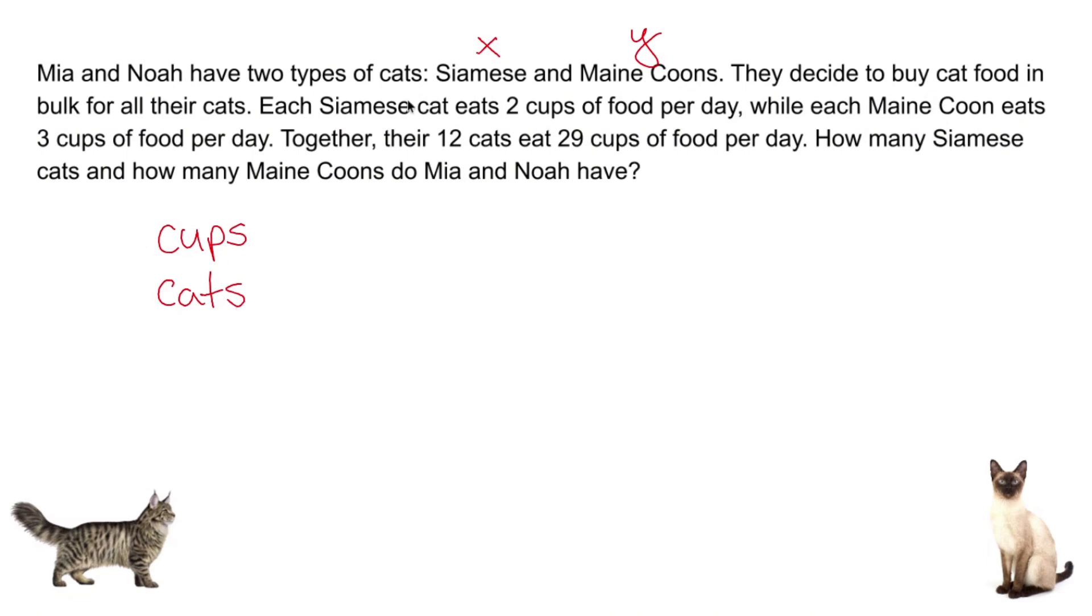Let's take a look at the cups part. Each Siamese cat X eats two cups, so we could say 2X. Maine Coon Y eats three, so we could say 3Y. Together, their 12 cats eat 29 cups. So the amount of cups that they eat is going to be 2X plus 3Y equals 29.